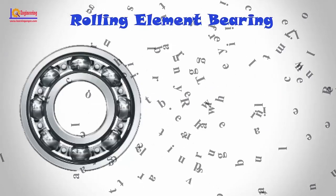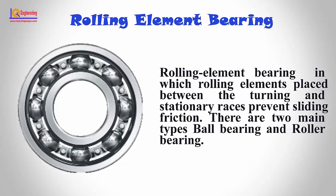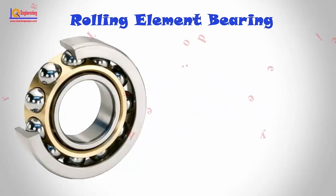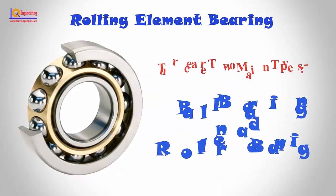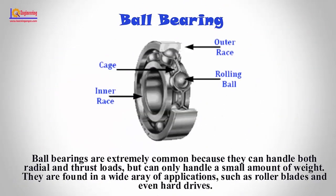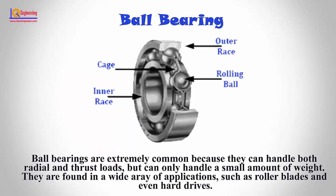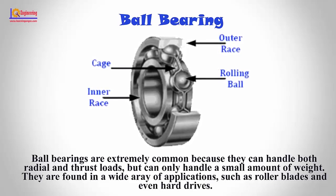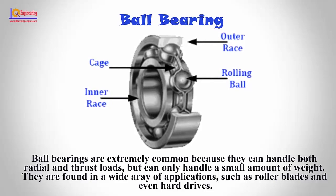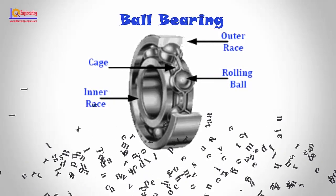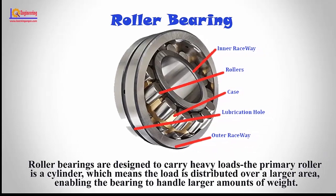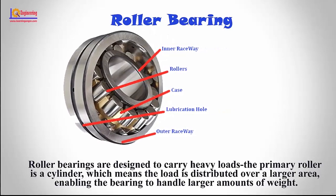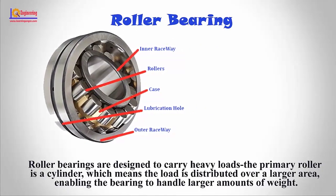Rolling element bearings are bearings in which rolling elements placed between the turning and stationary races prevent sliding friction. There are two main types: ball bearing and roller bearing. Ball bearings are extremely common because they can handle both radial and thrust loads, but can only handle a small amount of weight. They are found in a wide array of applications, such as rollerblades and even hard drives. Roller bearings are designed to carry heavy loads. The primary roller is a cylinder, which means the load is distributed over a larger area, enabling the bearing to handle larger amounts of weight.